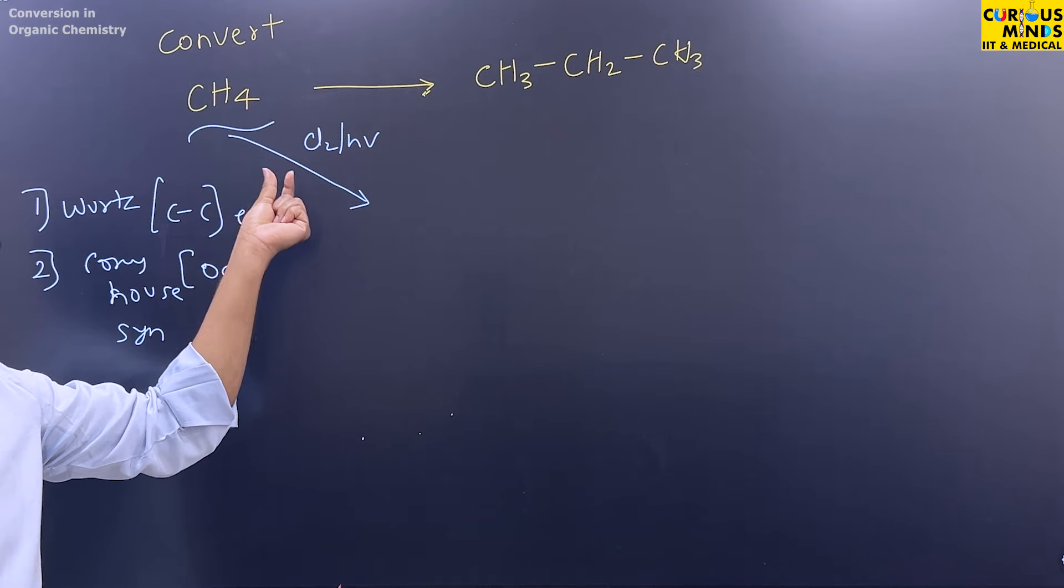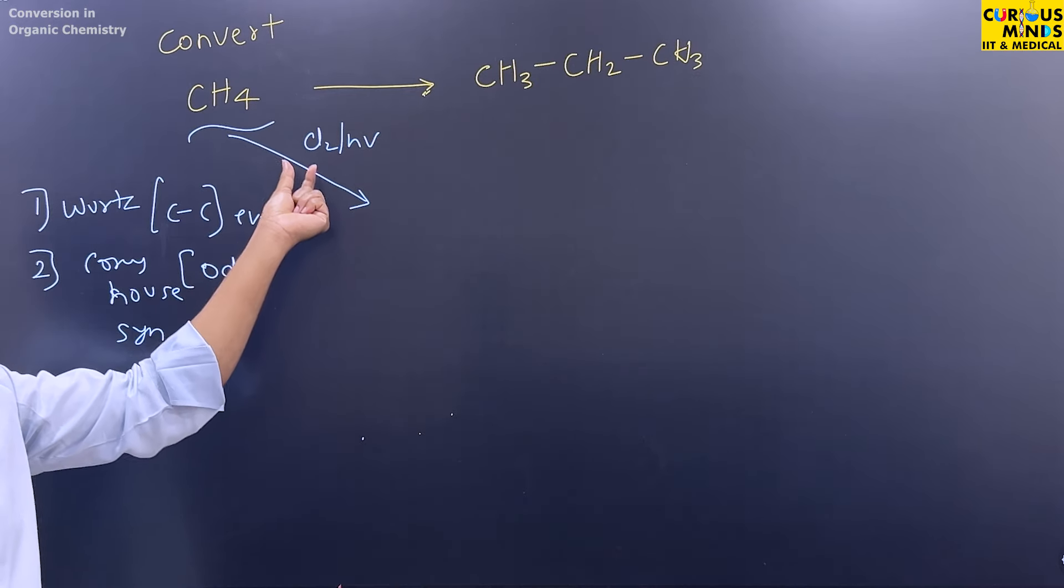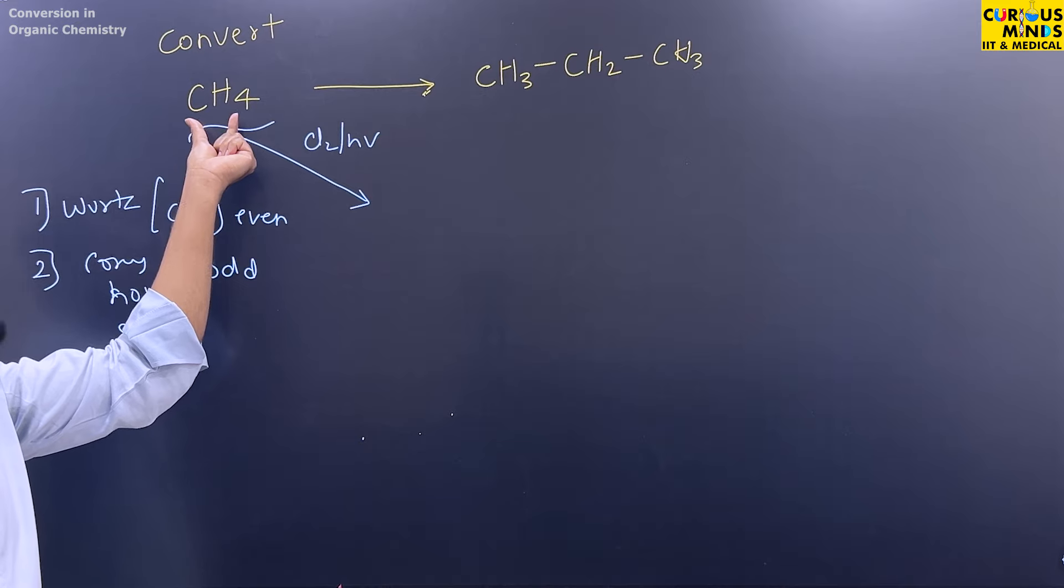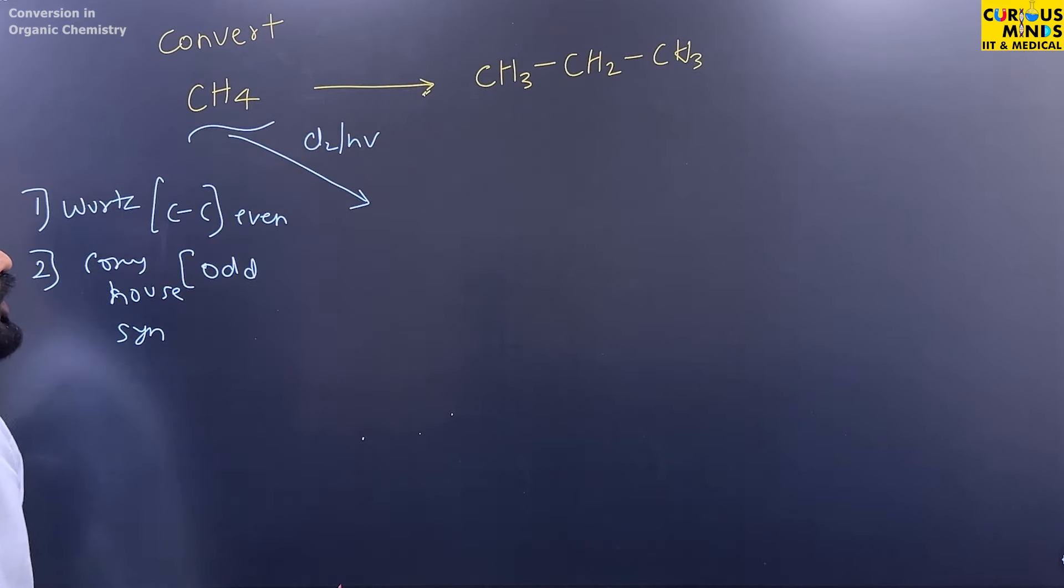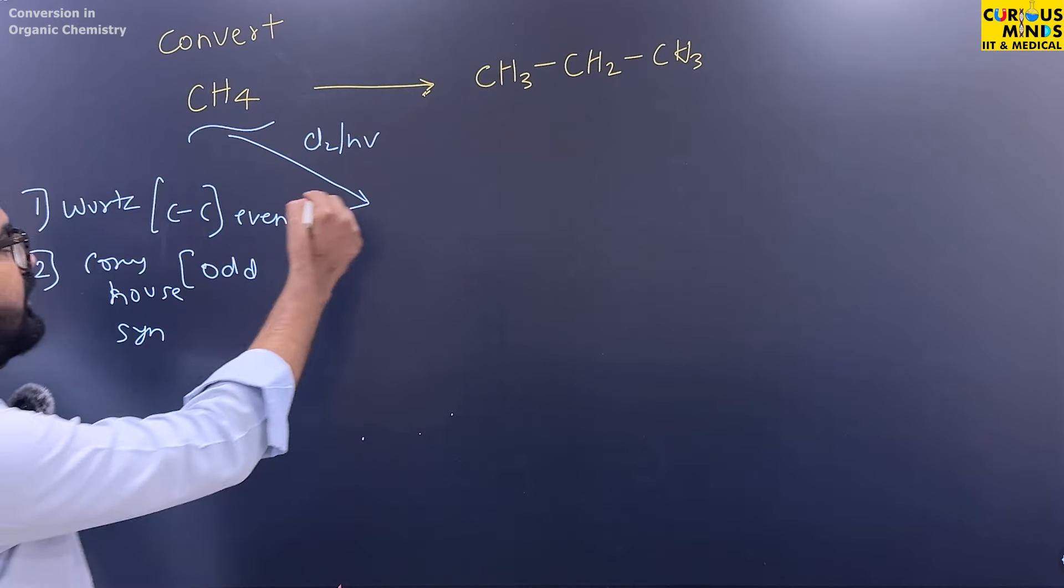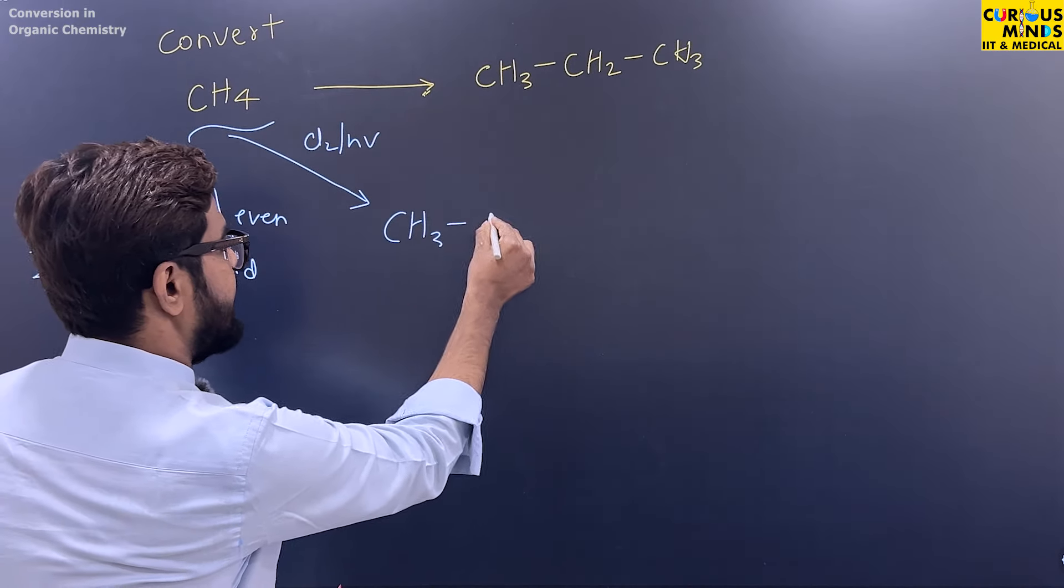Why do we do this? Because methane is very unreactive. So we will activate it with chlorine in presence of sunlight. So this will convert into CH3-Cl.